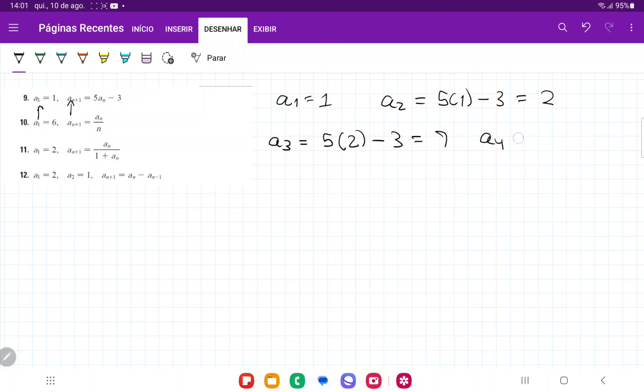a4 is once more going to be 5 times a3, so 5 times 7 minus 3, and that is going to give us 32.